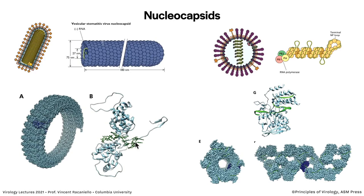The nucleocapsid is the RNA-protein complex — a substructure within the particle. For VSV, it's an envelope virus with a nucleocapsid of RNA and a single nucleoprotein. Here's the three-dimensional structure of part of the nucleocapsid; you can see one subunit of the protein in dark blue, wound around in a helix. Influenza viruses also have a nucleocapsid. The RNA binds in a groove in the nucleoprotein, very much like the VSV situation.